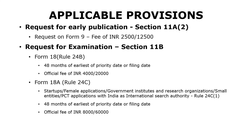Some additional activities that you could undertake along with filing the complete specification: one is a request for early publication under Section 11A(2). Generally, publication happens after 18 months of filing. If you want the application published before that 18-month period, you could file a request on Form 9 along with the official fee, and the application will be published on an expeditious basis — generally within the next one month after filing Form 9.